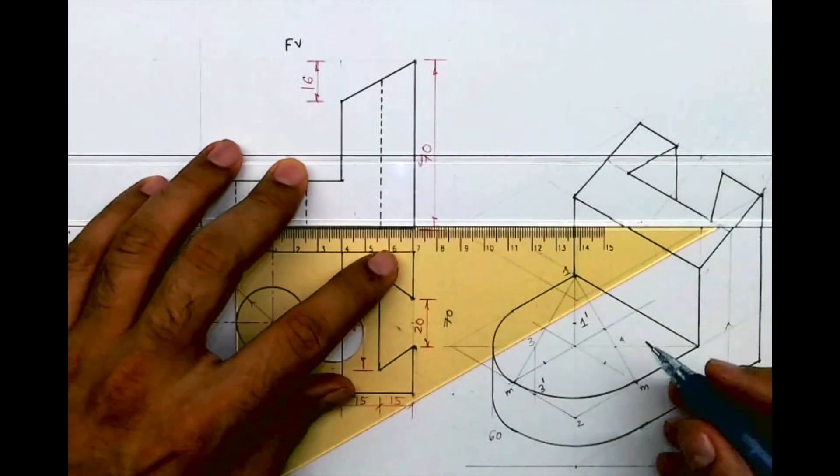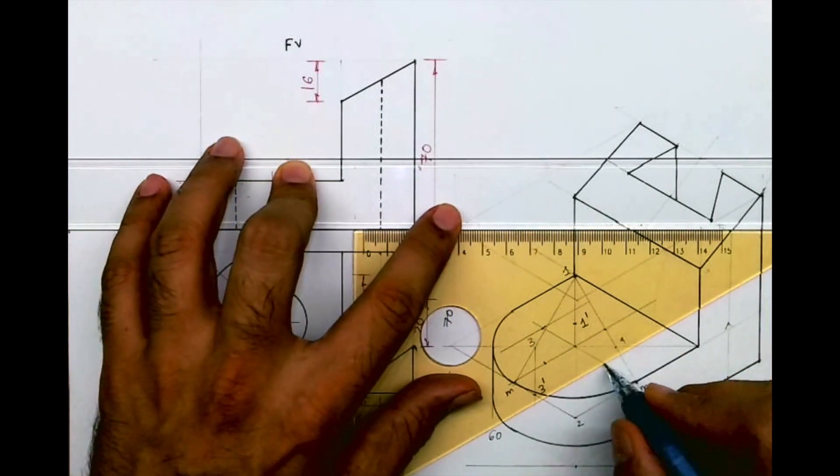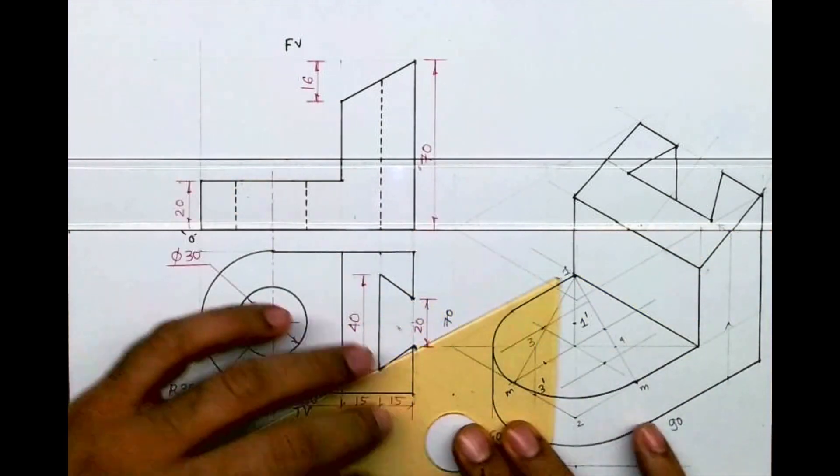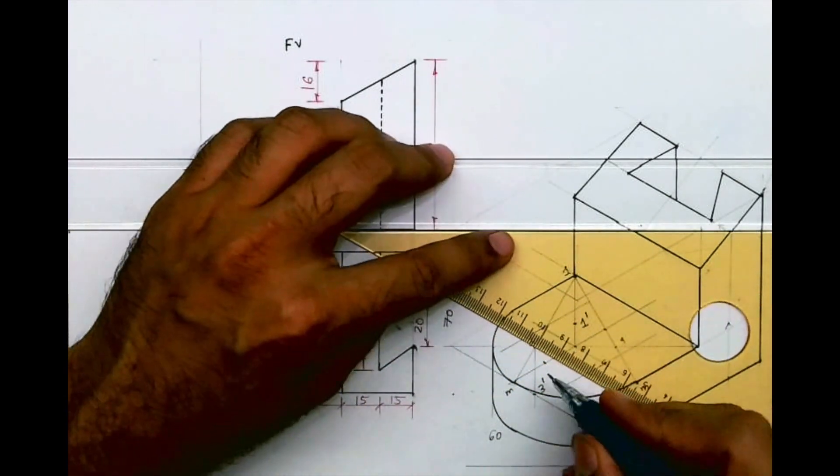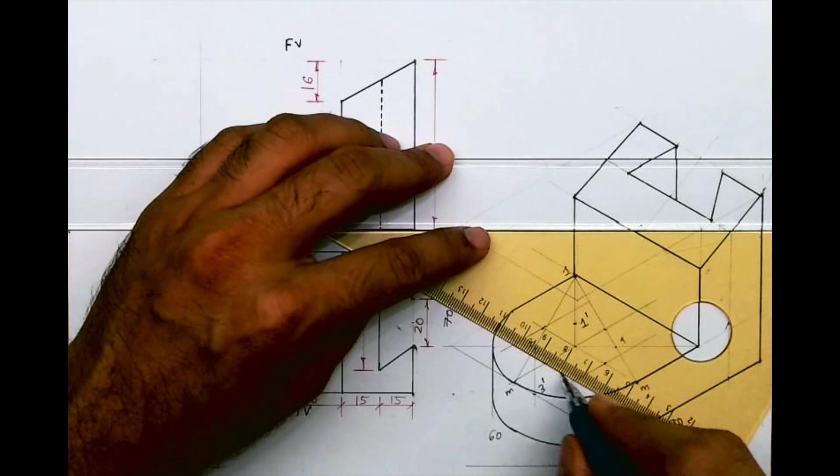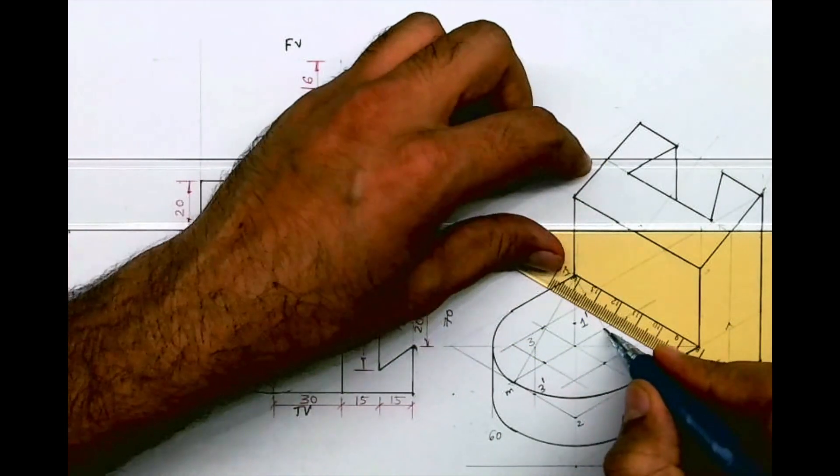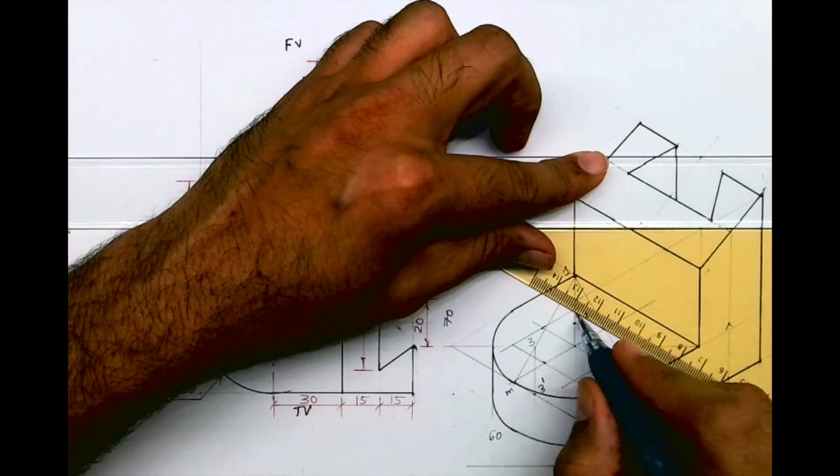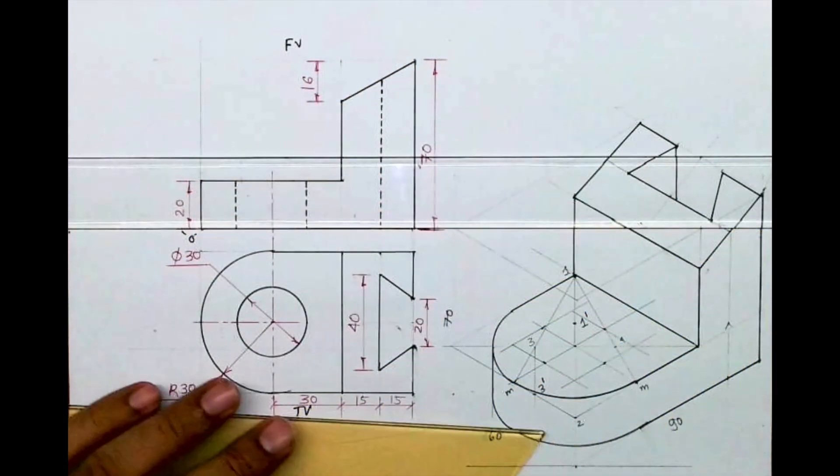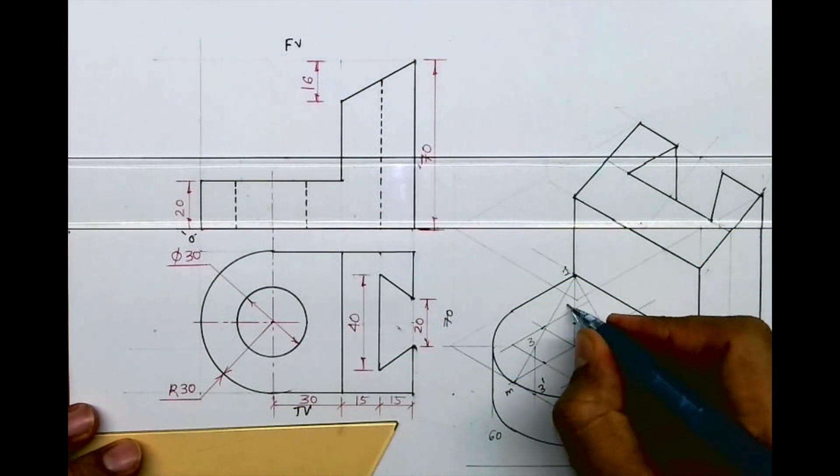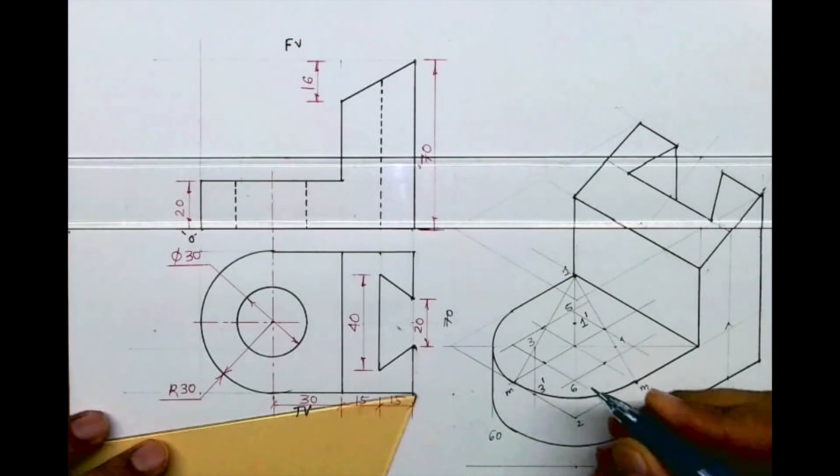Then I will draw parallel line. So I got rhombus of diameter 30. Rhombus for diameter 30. This is 5, 6.